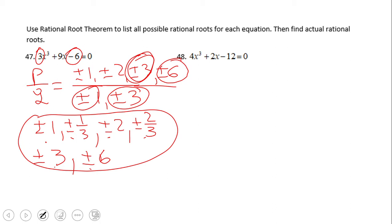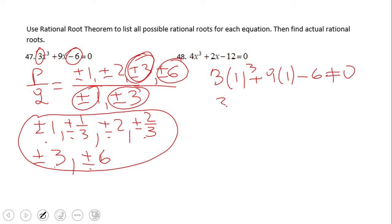How do I find the actual roots? That is the long process of plugging in. I'll show you a couple. 3 times 1-cubed plus 9 times 1 minus 6 — is that equal to zero? I don't think it's zero. The same way we can try with negative 1: 3 times negative 1 to the third power plus 9 times negative 1 minus 6 — is that zero? Obviously it's not zero. So you keep doing this process and you hope you're going to find one.